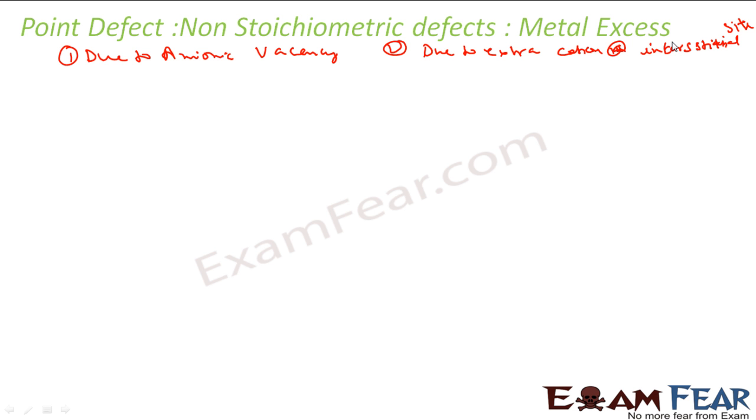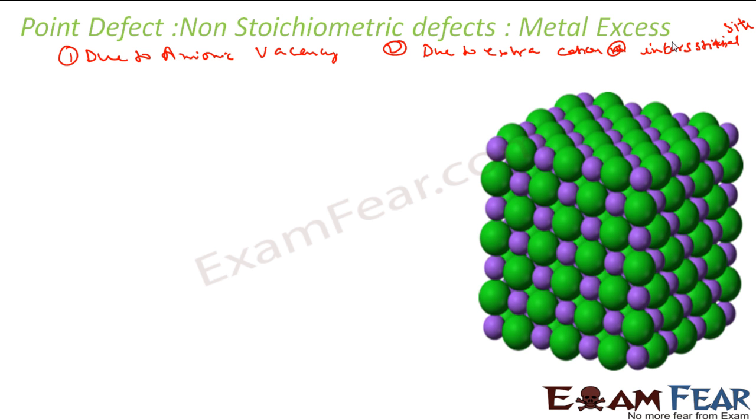See, alkali halides like sodium chloride, potassium chloride, they show this defect. So when you heat this sodium chloride, example you take the sodium chloride and when you heat this with sodium vapors, you heat this with sodium vapors. So lot of sodium vapors will come out. Here will be here nearby here. Now what happens is lot of sodium vapors. Now this chlorine, the green one, chlorine will come out to the surface.